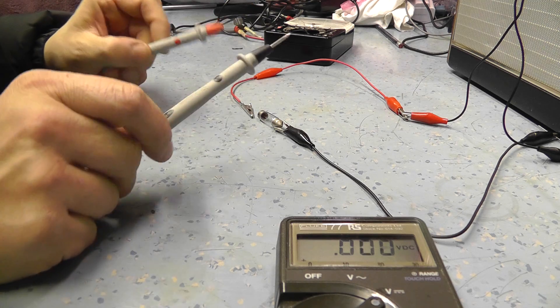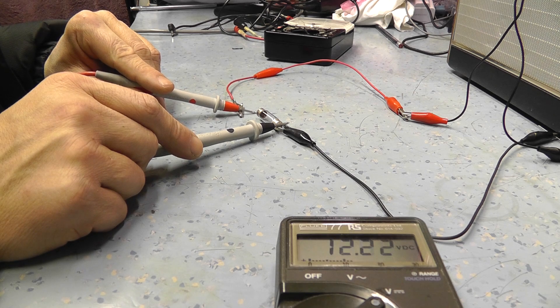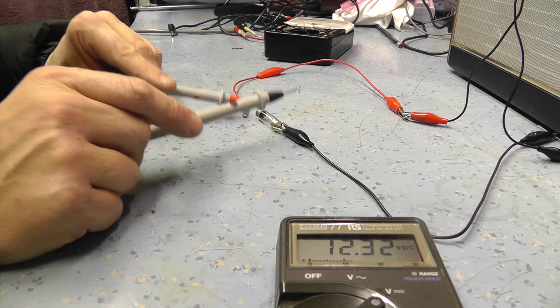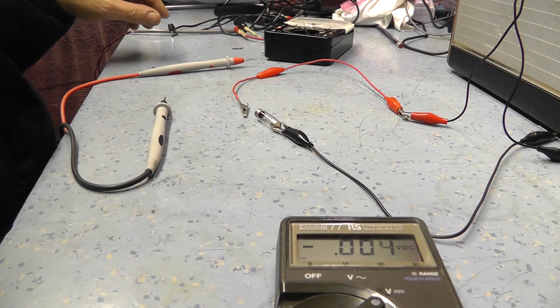So basically what's happening is, even though we've got a very high series resistance, because the meter's such a low load on it, it's still showing 12 volts. We're not offering any resistance to the current, basically. That's, I think, the easiest way to describe it.